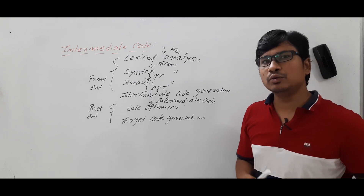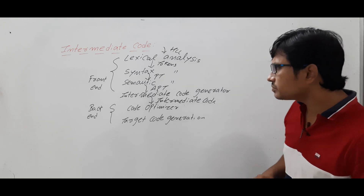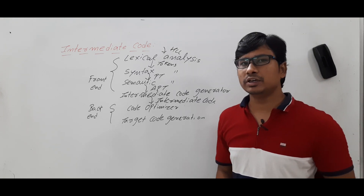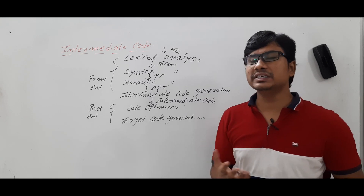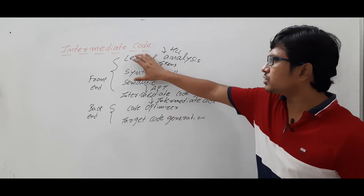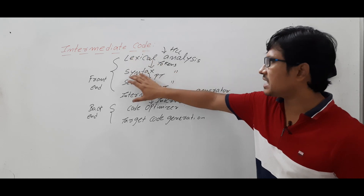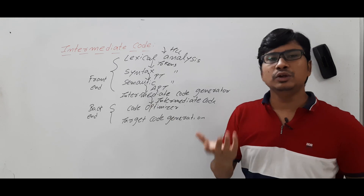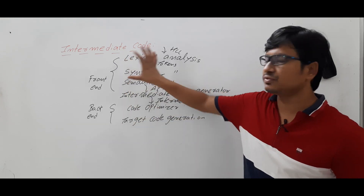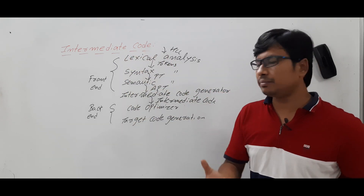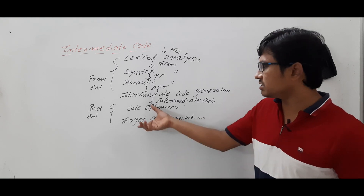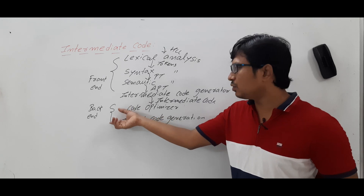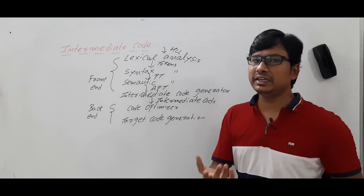If we have an intermediate code, what will happen? We will discuss now. When I discussed the various phases of a compiler, I made one important point: if you want to design a new compiler, you do not need to start from scratch — writing lexical analysis, syntax analysis, semantic analysis, and intermediate code generation. You do not need to write code for these four phases. For a new compiler or a new programming language, you only need to write the code for the back end of the compiler. Why? Because we have the intermediate code.